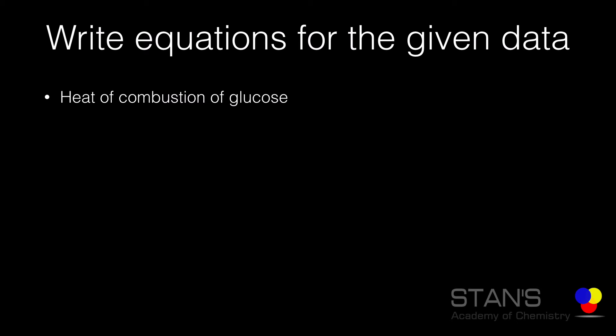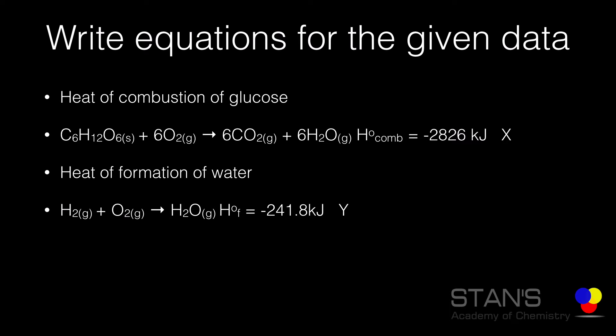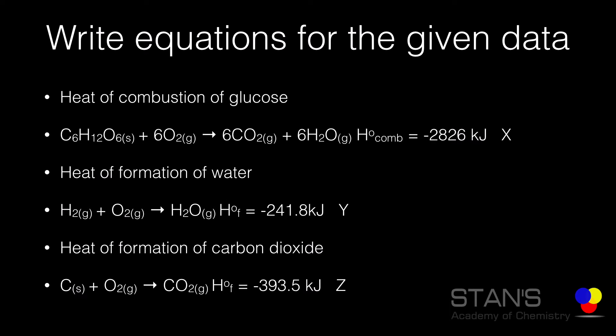The first thing to do is write equations for the given data. For the enthalpy of combustion of glucose, the equation is C₆H₁₂O₆ + 6O₂ → 6CO₂ + 6H₂O, and the enthalpy of combustion is minus 2826 kilojoules. For the heat of formation of water: H₂ + ½O₂ → H₂O, with a standard enthalpy of minus 241.8 kilojoules per mole. For the heat of formation of carbon dioxide: C(s) + O₂(g) → CO₂(g), with an enthalpy of minus 393.5 kilojoules. We label these three equations X, Y, and Z, and will use them to determine the standard enthalpy of formation of glucose.